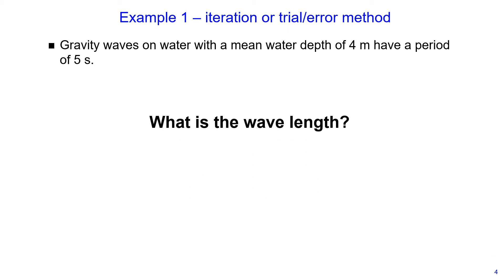Now let's solve an example where we need to use the iteration method to determine the wavelength. Sometimes this method is also called trial and error method. So our problem is, we have gravity waves on water with a mean water depth of 4 meters and these waves have a period of 5 seconds. And we need to determine the wavelength. I will show you how you can do iteration manually, without using a calculator and also without using any other functions such as solver function in Excel.